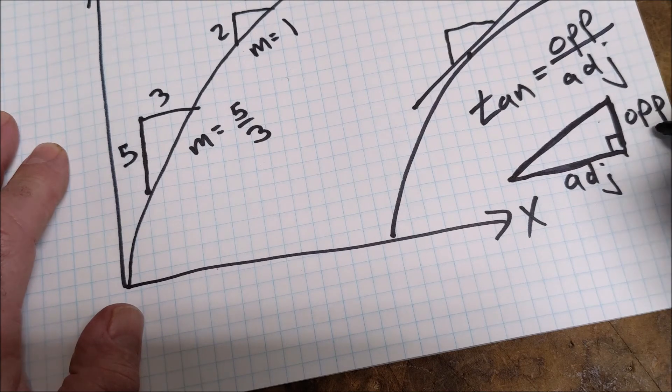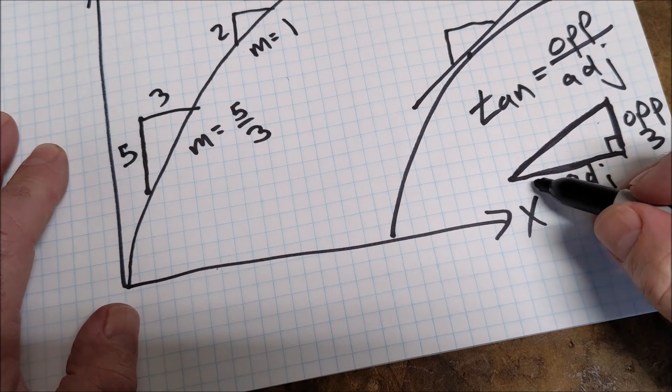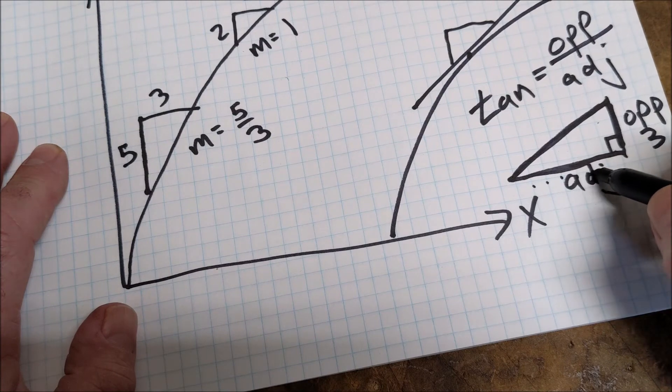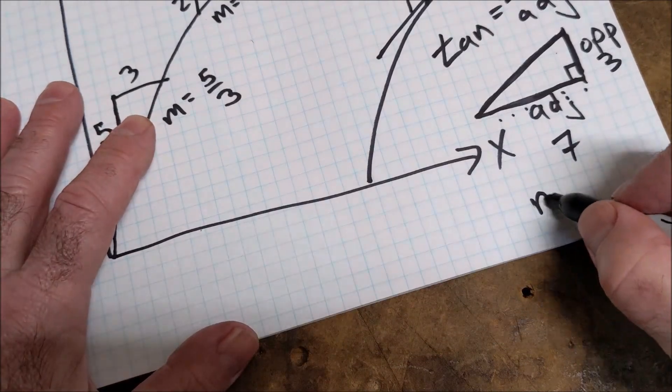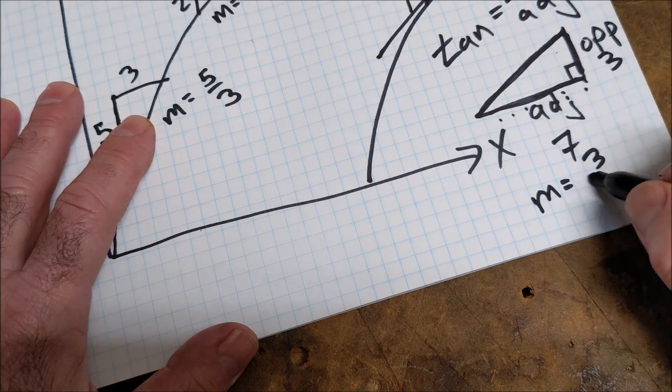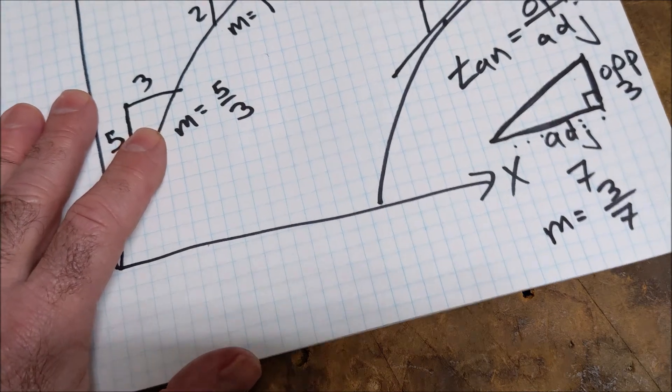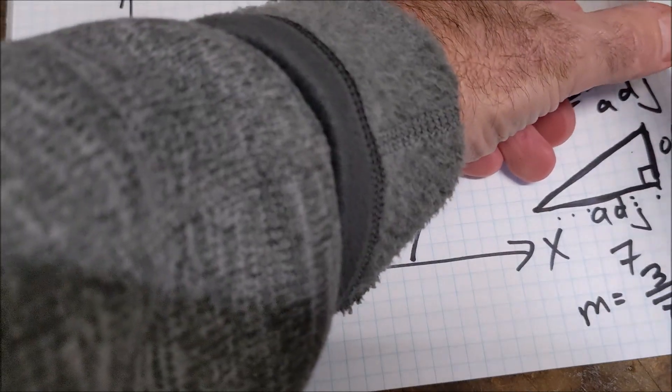In this case, my opposite leg is three. My adjacent leg is one, two, three, four, five, six, seven. So my slope here, M, would be equal to rise over run. Opposite over adjacent. Kind of cool, kind of cool stuff.